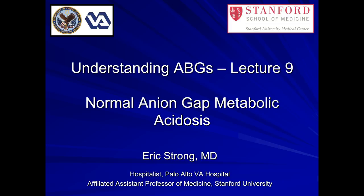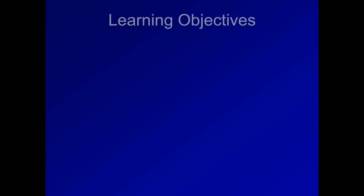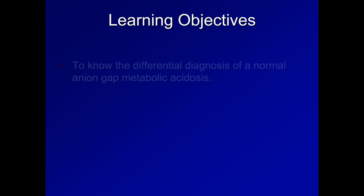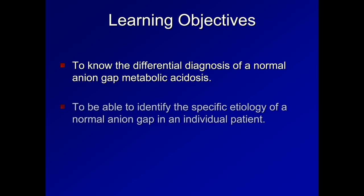Hello, this is Eric Strong, and this is the ninth lecture in this series on understanding ABGs. The topic today is normal anion gap metabolic acidosis. The learning objectives are to know the differential diagnosis of a normal anion gap metabolic acidosis, and to be able to identify the specific etiology of a normal anion gap in an individual patient.